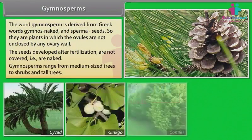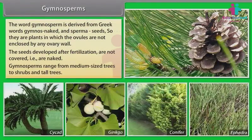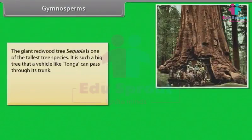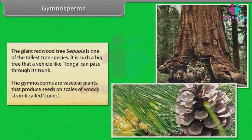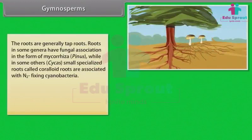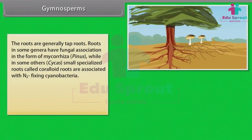Gymnosperms range from medium-sized trees to shrubs and tall trees. The giant redwood tree, Sequoia, is one of the tallest tree species — it is such a big tree that a vehicle like a Tonga can pass through its trunk. The Gymnosperms are vascular plants that produce seeds on scales of woody strobili called cones. The roots are generally tap roots. In some genera, roots have fungal association in the form of Mycorrhiza, as in Pinus.